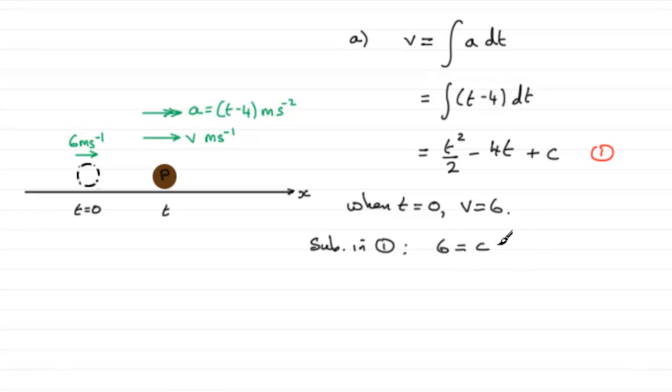We can substitute this back into equation 1 again, and we get v in terms of t. We end up with therefore v equals t² over 2 minus 4t plus that constant of integration, which we've now found out is 6. So there you go, v in terms of t.